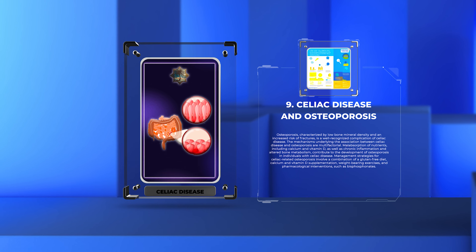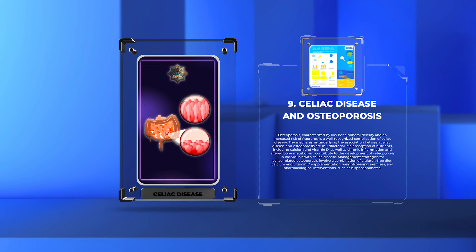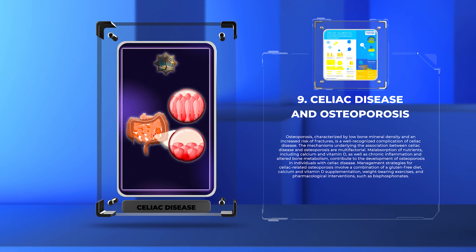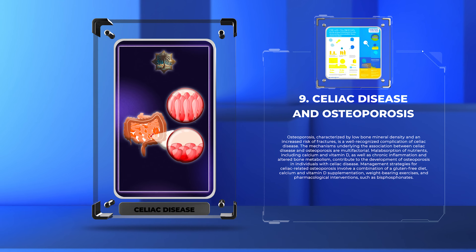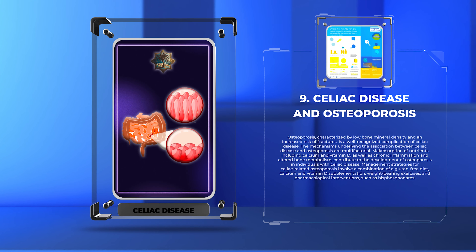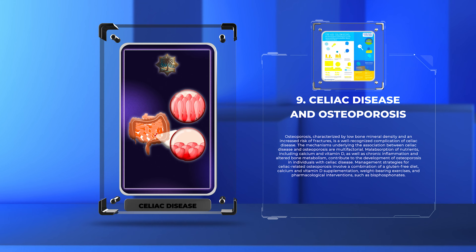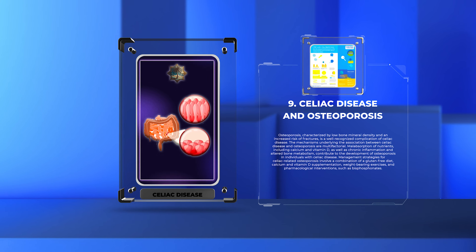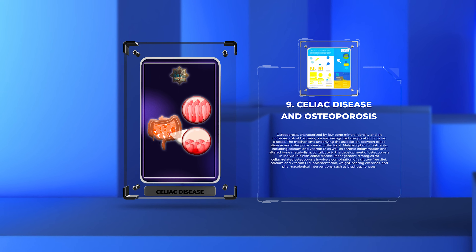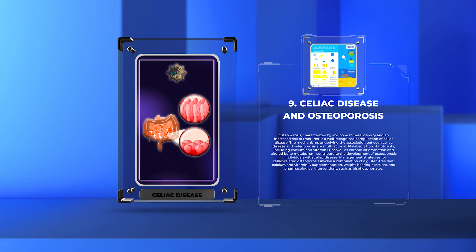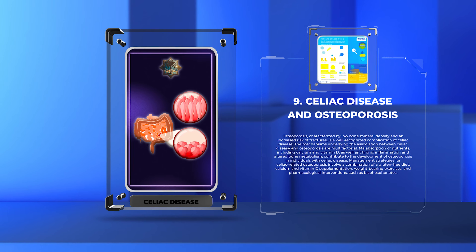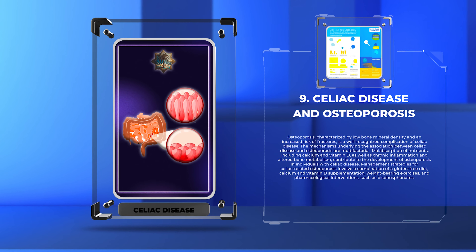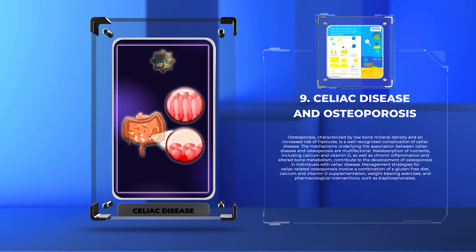Osteoporosis, characterized by low bone mineral density and an increased risk of fractures, is a well-recognized complication of celiac disease. The mechanisms underlying the association between celiac disease and osteoporosis are multifactorial. Malabsorption of nutrients, including calcium and vitamin D, as well as chronic inflammation and altered bone metabolism, contribute to the development of osteoporosis in individuals with celiac disease.